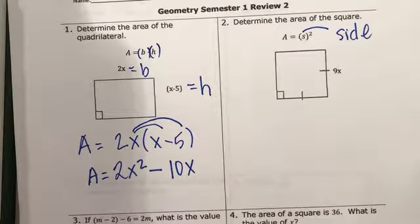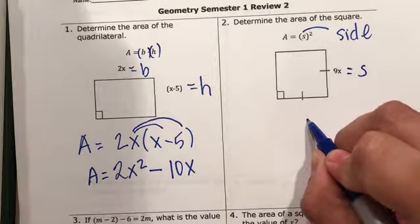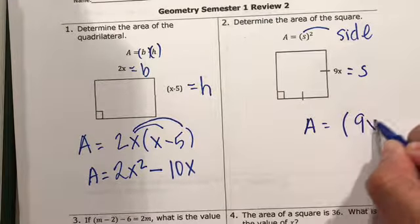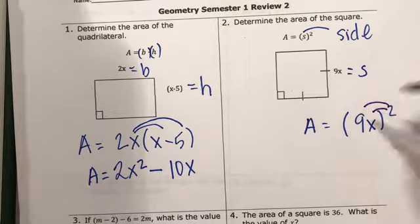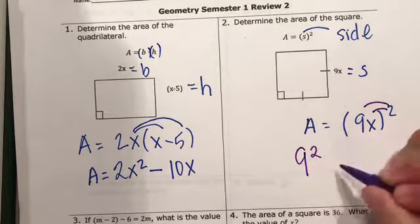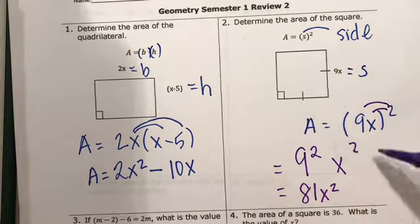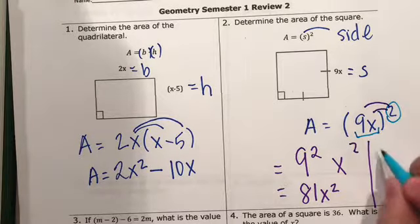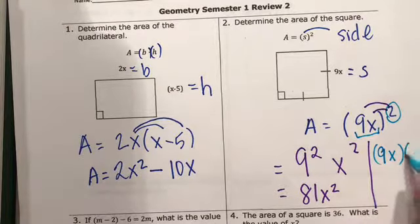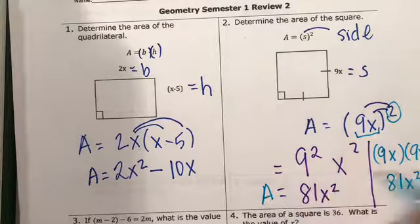For number 2, determine the area of the square. So s equals side. So that means that this is going to be equal to s. So we're going to say area equals 9x squared. So when you have an exponent, you can distribute the exponent. So that's going to be 9 squared times x squared, which is equal to 81x squared. Another way of doing this is saying, I have 9x and I have 2 of them. So you can say 9x times 9x, and that's going to give me 81x squared. Both are the correct answer.